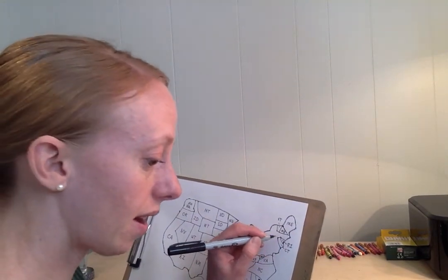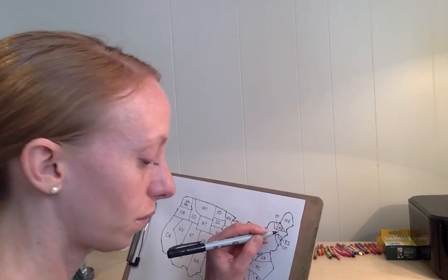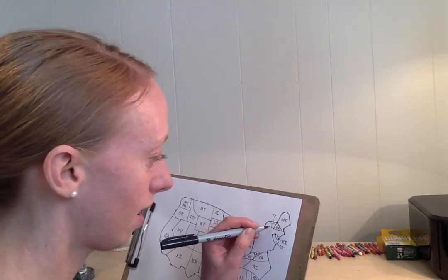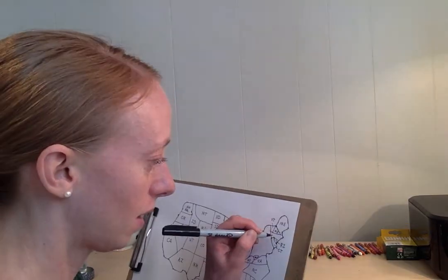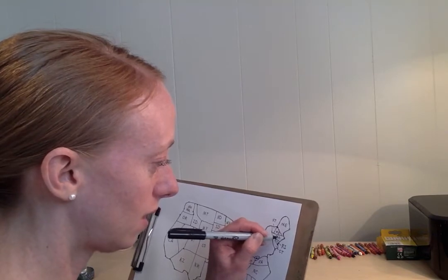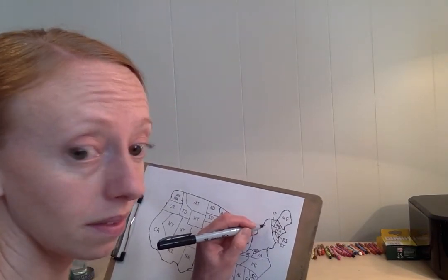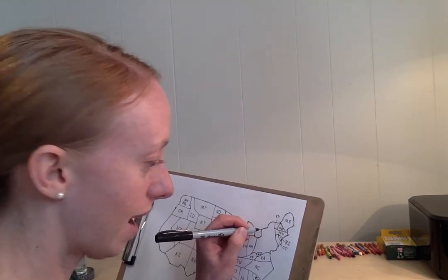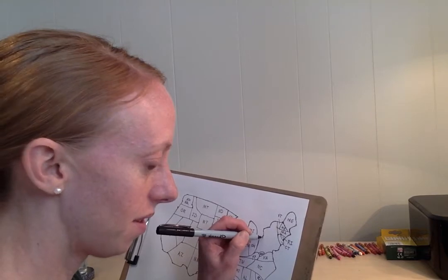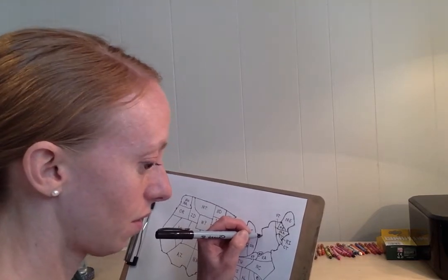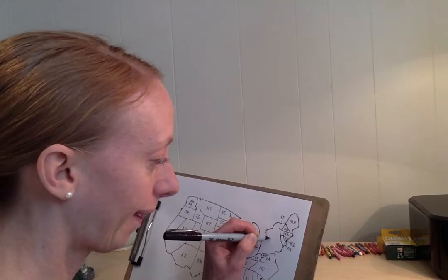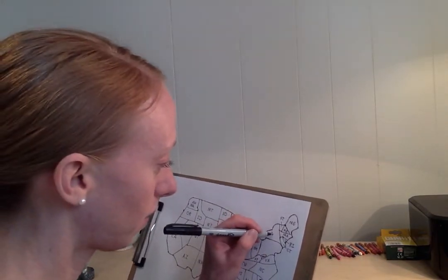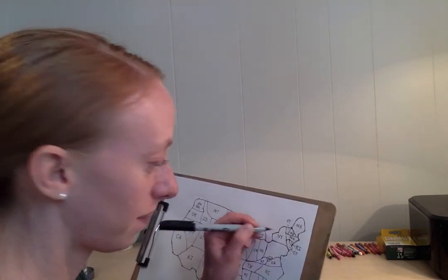This area up here: we've got Massachusetts here and New York here. New York is coming from this bump out, down, and over, down next to Connecticut — New York.